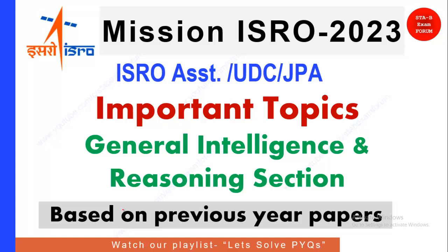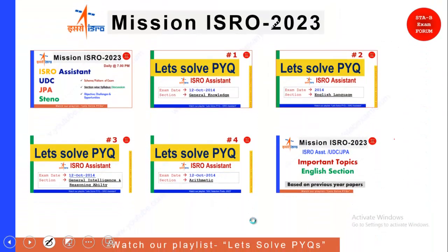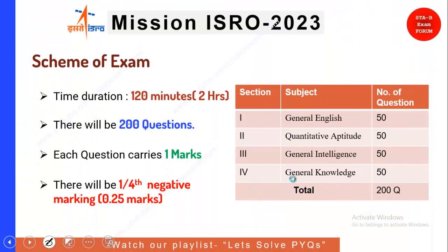Welcome to STAB Exam Forum. We have brought a new video on the ISRO System UDC and JPA exam. Today's topic of discussion is important topics for the General Intelligence and Reasoning section. This video is based on the previous year papers that we have solved in various other videos. There are also other videos on our channel which may be very helpful during your preparation for the ISRO System exam. In the last video we covered the important topics for the General English section, and in this video we are going to cover the General Intelligence and Reasoning section.